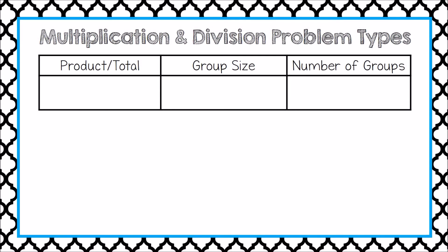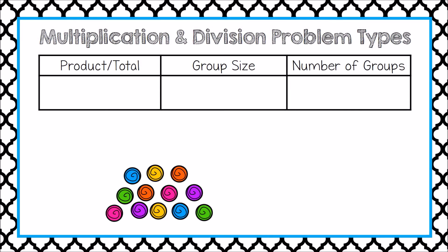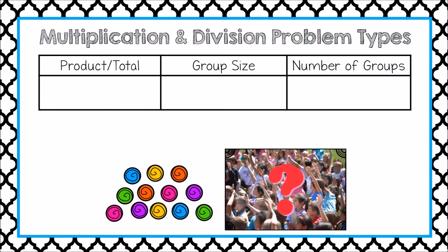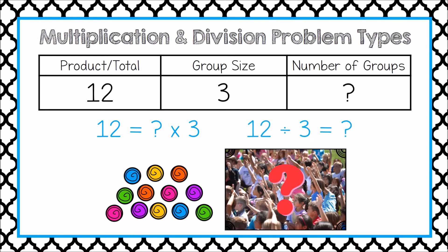Here's one more problem. Laney has 12 candies. If he gives three candies to each friend, how many friends will get candies? Again, we know the product or the total. This time, we know the size of the groups — each person will get three candies. We just don't know the number of groups, or the number of people who will receive candies. This problem could again be seen as a multiplication problem with an unknown factor, or as a division problem.